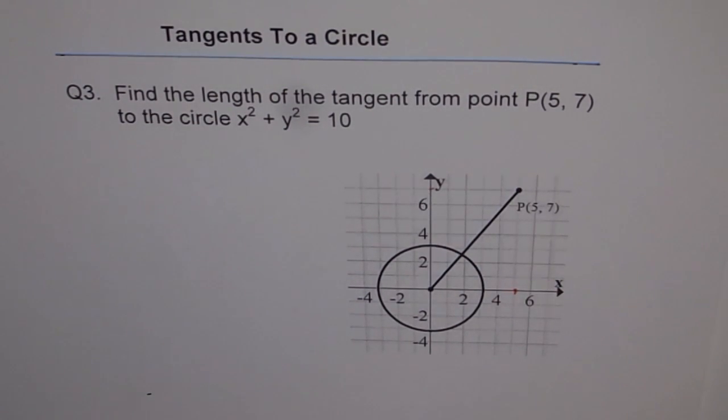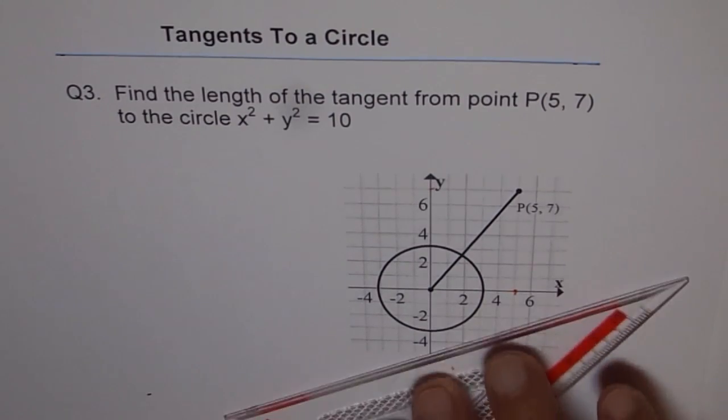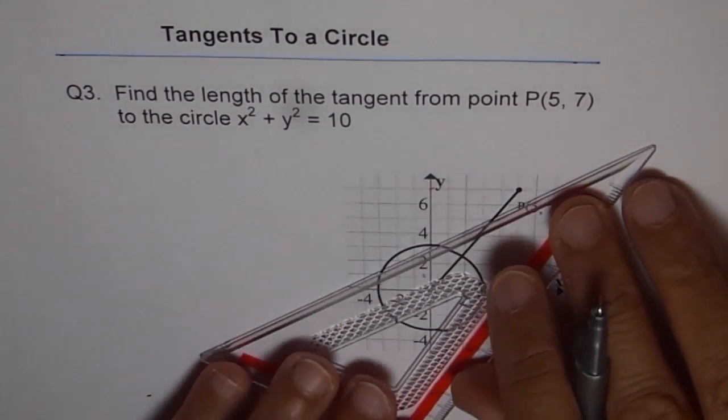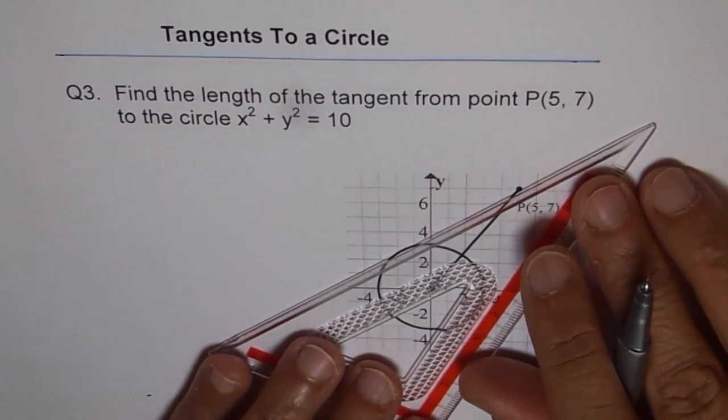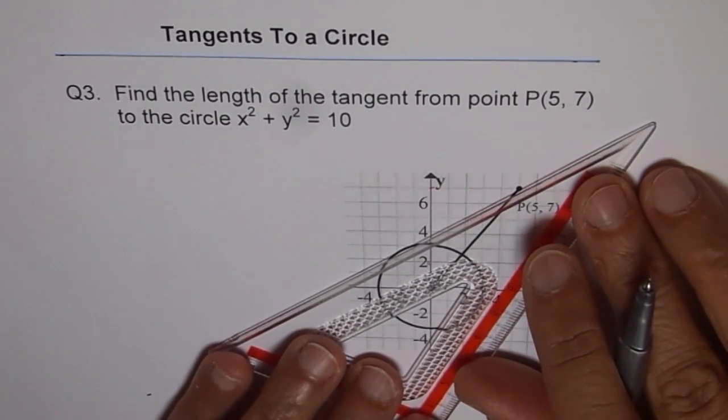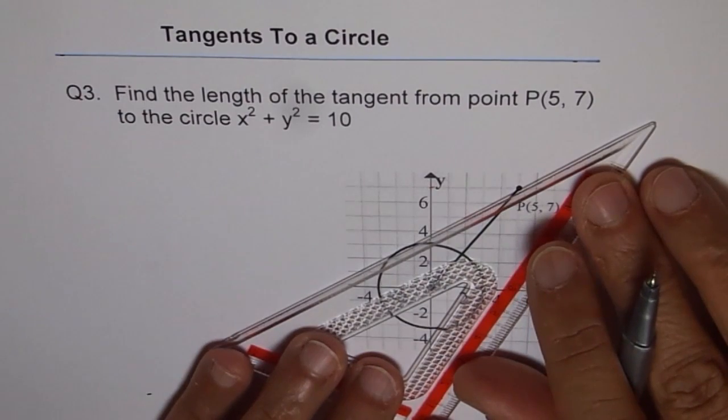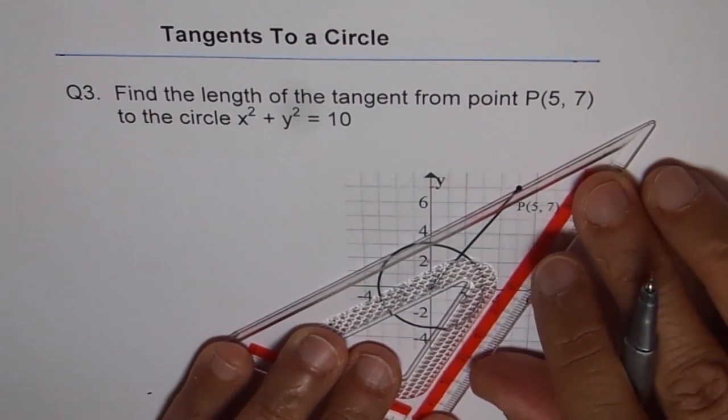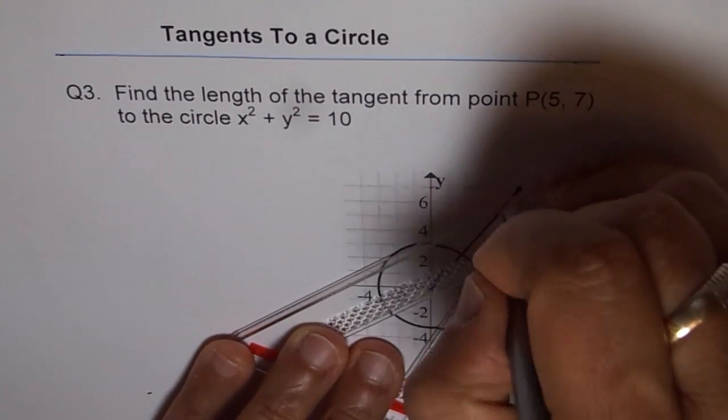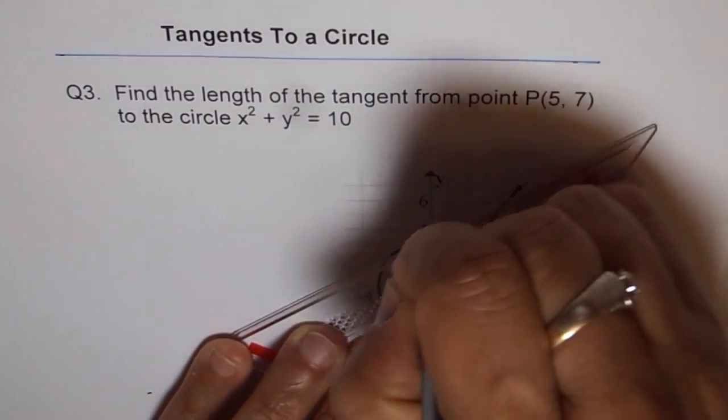Now, to find the length of the tangent, let's sketch one tangent. Let's draw one. So let's go like this and draw a line from the given point to the circle where it touches just at one point. That is the definition for the tangent.